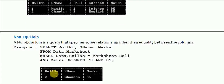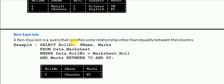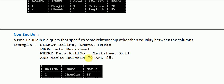The next type is the non-equi join. A non-equi join is like an equi join but with an additional condition. It specifies some relationship other than equality between columns. By adding an AND clause, you add one more condition — for example, marks BETWEEN 70 AND 85, meaning both 70 and 85 are included. Here only 'Chandan' appears in the output, and only the specified column names appear in the SELECT clause.